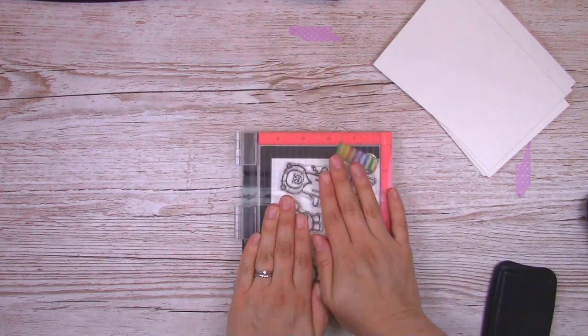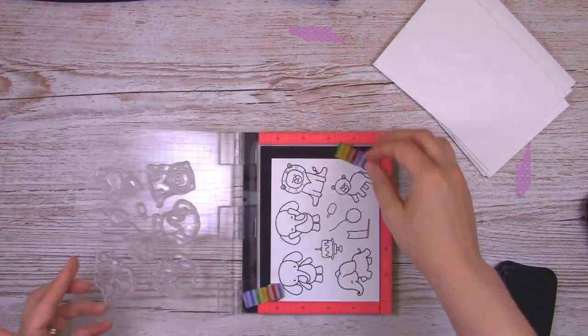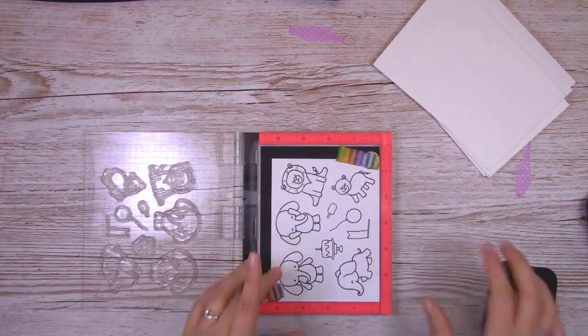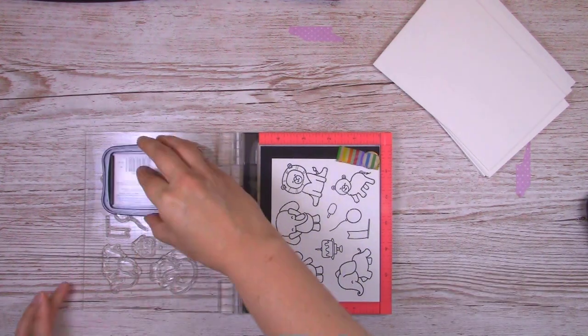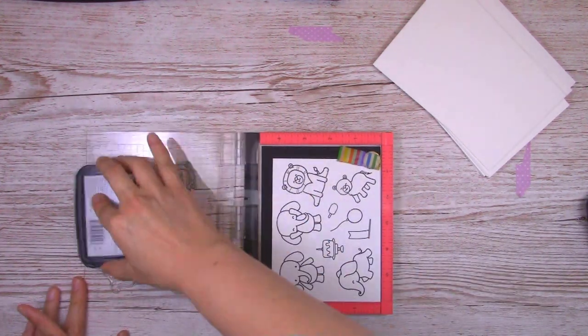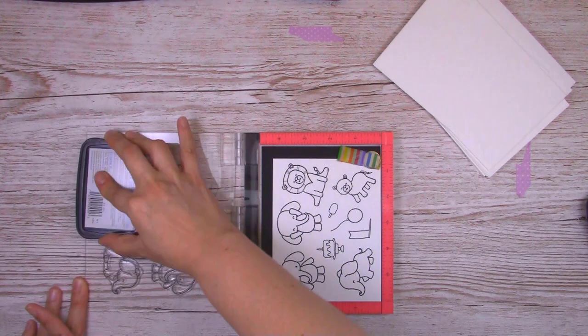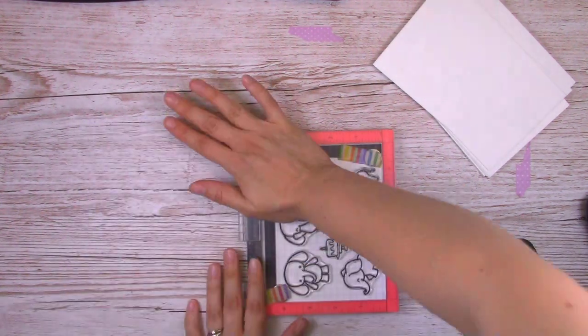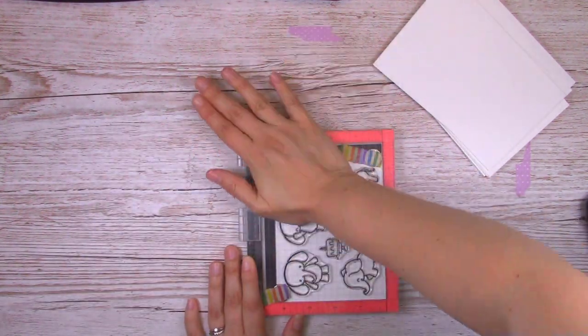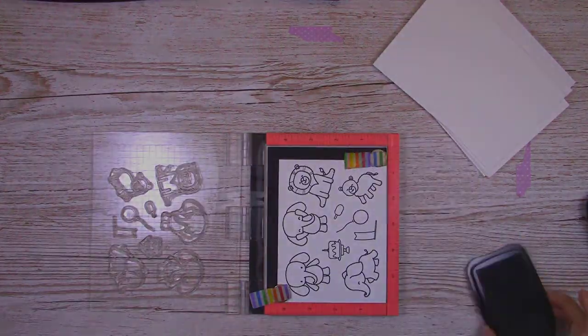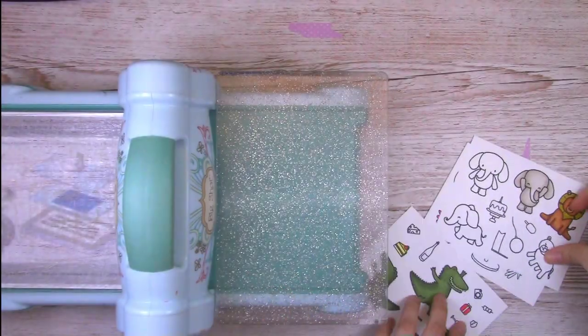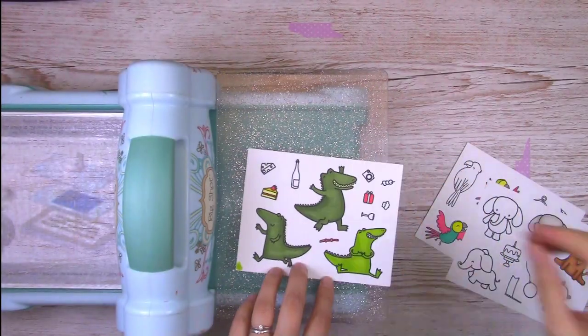So I've stamped my images with some Memento Tuxedo Black Ink because I was going to be doing some Copic coloring. And I've actually spared you the coloring process on this video because what I did was I just grabbed my stamped images and my Copic markers and I did some coloring on the go over at my in-laws and here and there and everywhere.